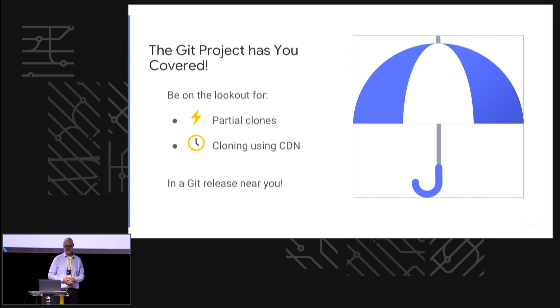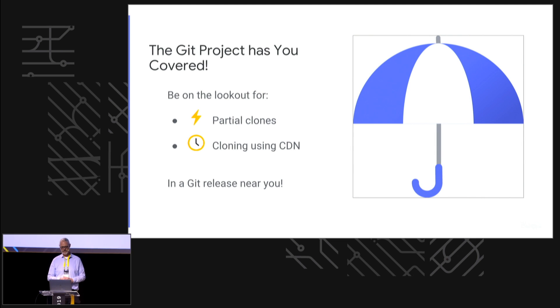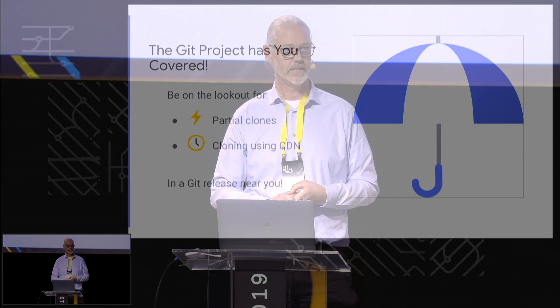My takeaway message is that the Git project is trying to deal with these things. Initially Git was intended for source code, but people are putting lots of other different types of assets in there, and Git hasn't always adapted well. But the Git community is cooperating to make sure these things work. Lots of companies have blog posts — GitHub does, Google has the open source blog, and Microsoft is also doing great work to help scale Git up. There are also release notes from within the Git project itself. So look for all these features coming to a Git release near you.